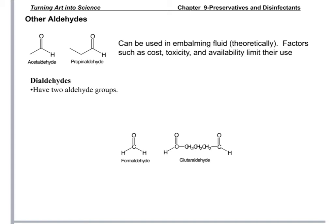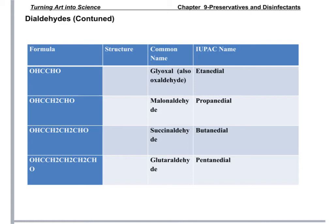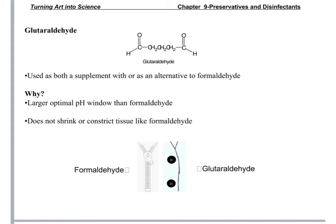You can also have a dialdehyde, which has two aldehyde groups attached. Glutaraldehyde is one example — it is a dialdehyde that can be used as a supplement or an alternative to formaldehyde. It will not shrink or constrict tissue, so in some instances it would be advantageous to use glutaraldehyde over formaldehyde.